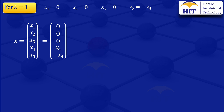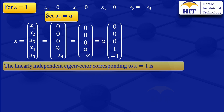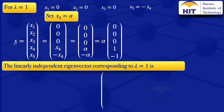So x₄ is the free variable, and we set it to be alpha, where alpha is a real number. When we do that, we get the vector [0, 0, 0, alpha, minus alpha]. Since alpha is a real number, we can factor it out, and we get alpha multiplied by [0, 0, 0, 1, minus 1]. We have infinitely many vectors and all of them are scalar multiples of [0, 0, 0, 1, minus 1]. Therefore, the linearly independent eigenvector corresponding to lambda equals 1 is [0, 0, 0, 1, minus 1]. We have now worked for all the given eigenvalues.